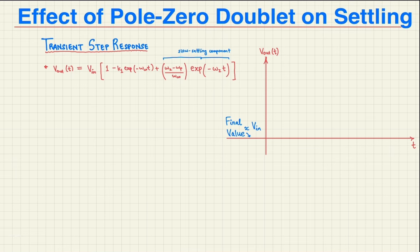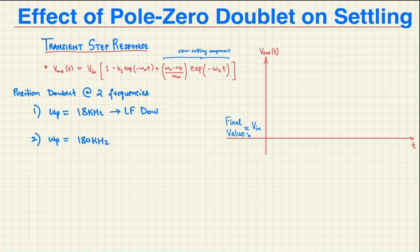Next, the authors studied the transient step response and recorded the settling time. They placed the doublet at two frequencies of 18 kHz and 180 kHz. So the 18 kHz which I'll call the low frequency doublet, and the 180 kHz I'll call the high frequency doublet. Both are well below the UGB of omega C0. The summary of their experiment was that the low frequency doublet gave a response which persisted for longer but with a smaller amplitude, as can be seen by the expression for Vout.